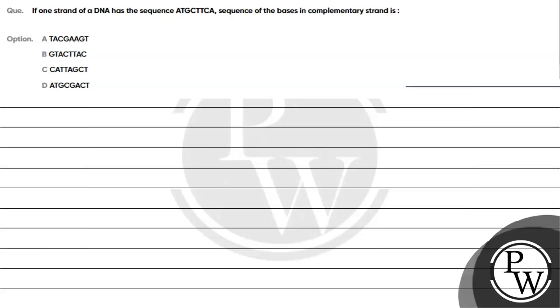Let's read this question. The question says if one strand of DNA has a sequence A, T, G, C, T, T, C, A — what is the sequence of the bases in the complementary strand?